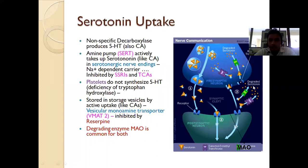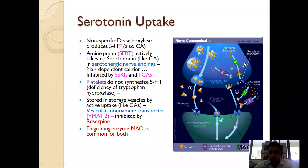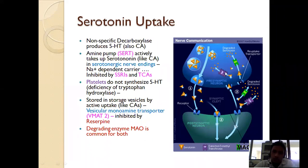After degradation, serotonin undergoes re-uptake via the re-uptake transporter so that it is not wasted — it gets re-taken up, converted back to serotonin, and reused. Serotonin uptake involves non-specific decarboxylase producing 5-HT, which is stored in storage vesicles by active uptake, similar to catecholamines.